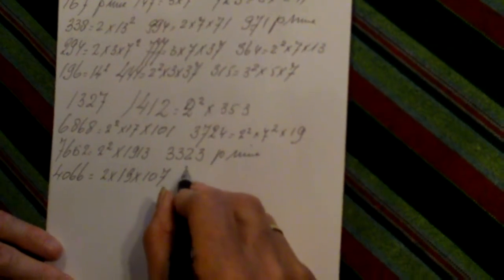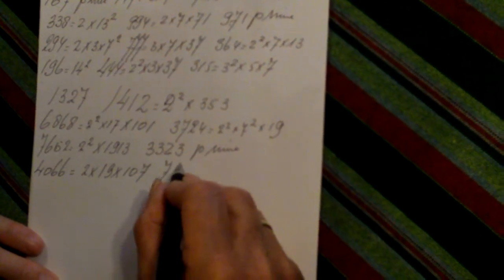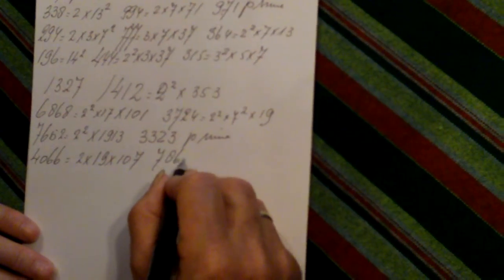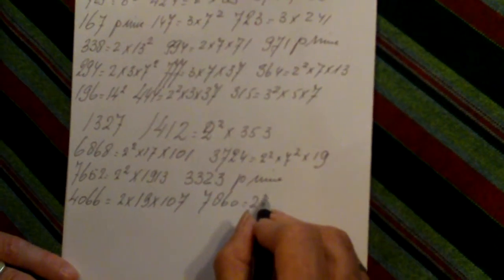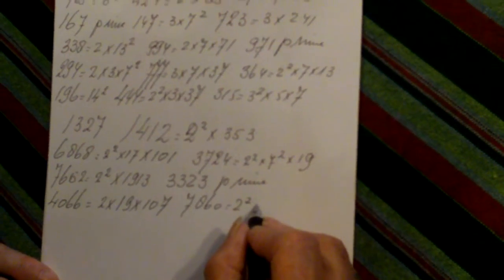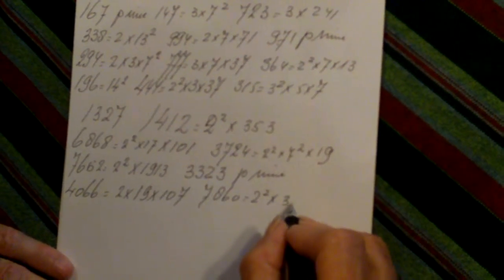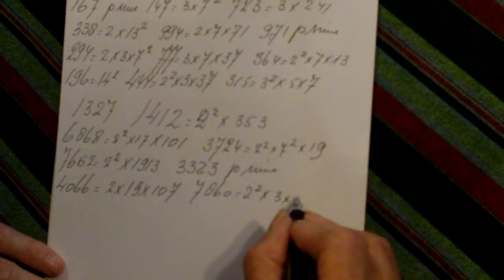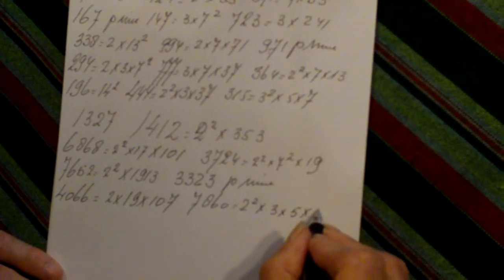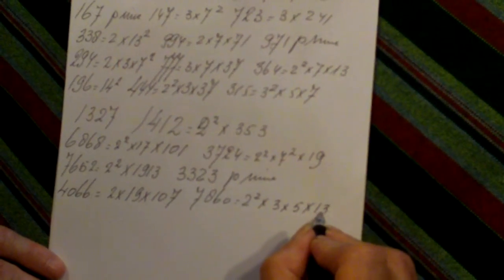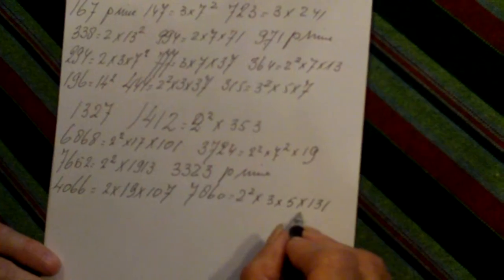Okay, 7860. Seven, eight, six, zero is two squared times three times five times one hundred thirty-one, which is prime.